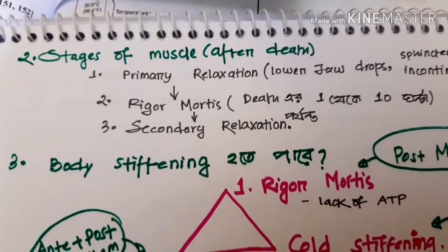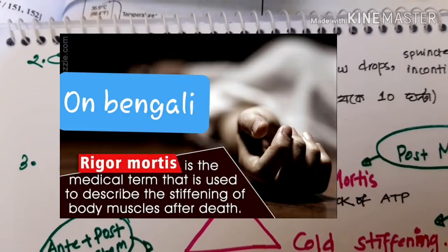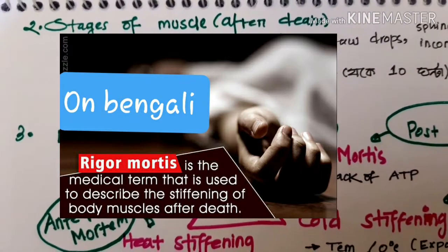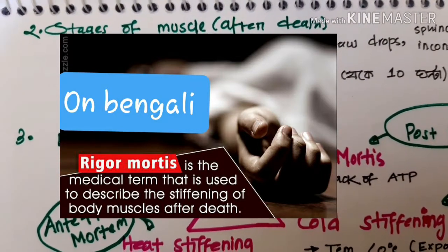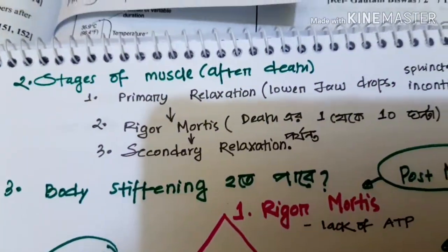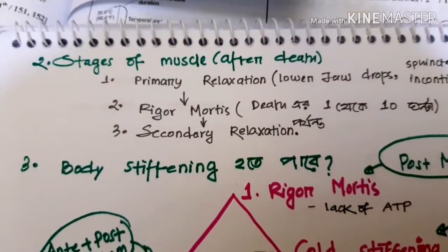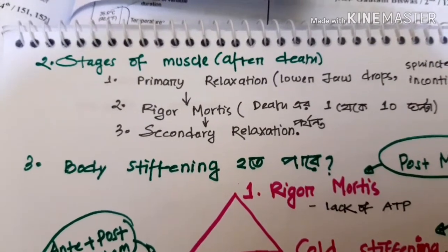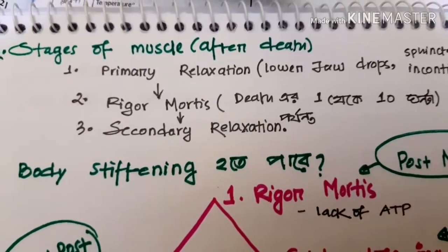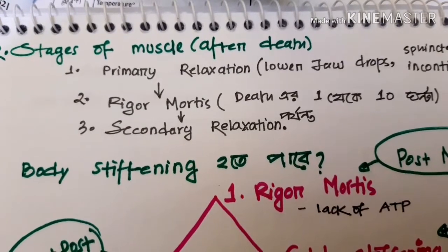Assalamu alaikum, myself Kaladasan Milo, and today's discussion is all about stages of muscle changes after death, and what is the difference between rigor mortis versus heat stiffening versus cold stiffening. After death, our body has three types of skeletal muscle, cardiac muscle, and smooth muscle. There are three types of changes: the first change is primary relaxation, this is rigor mortis, and secondary relaxation.